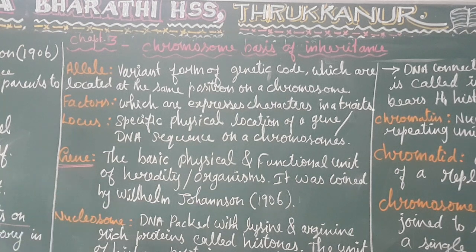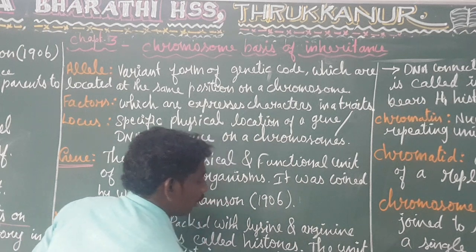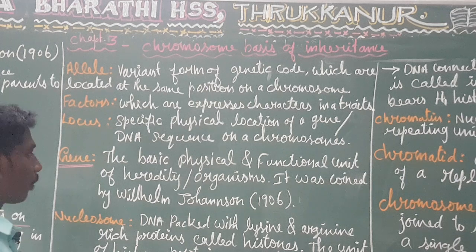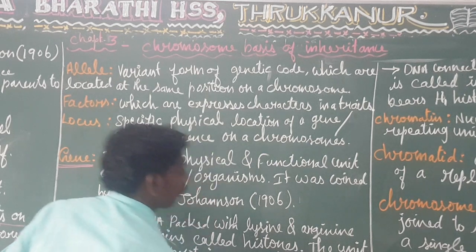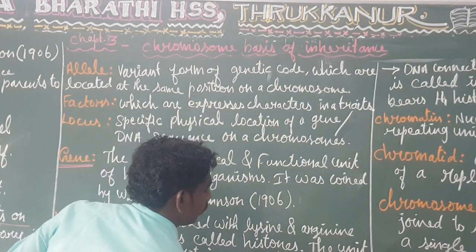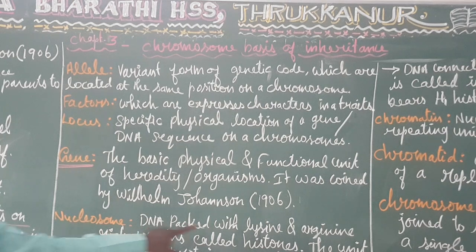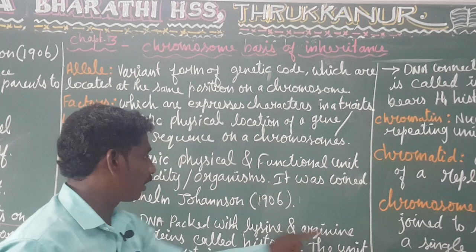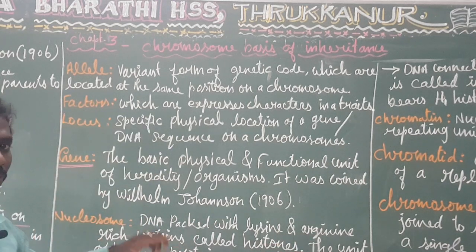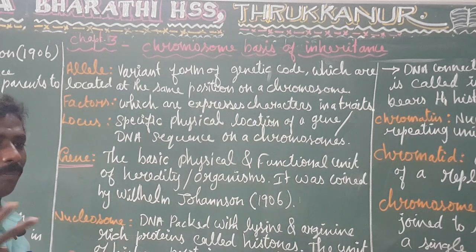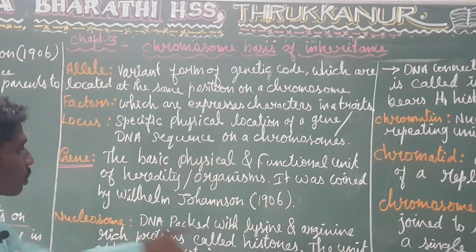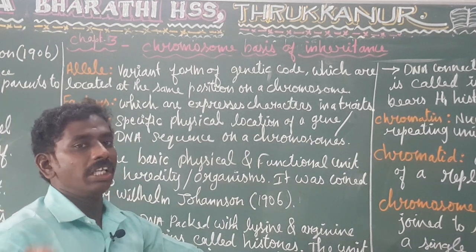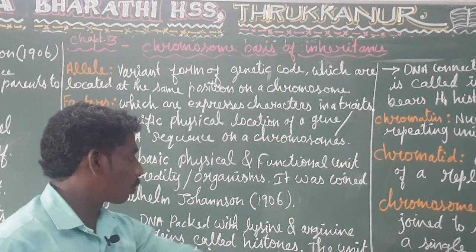In modern genetics, the nucleosome is a key structure. DNA is arranged linearly and coiled with nucleosomes. The DNA is packaged with the amino acids lysine and arginine — these are simple amino acids found in rich proteins called histones. A nucleosome is nothing but a histone protein unit.